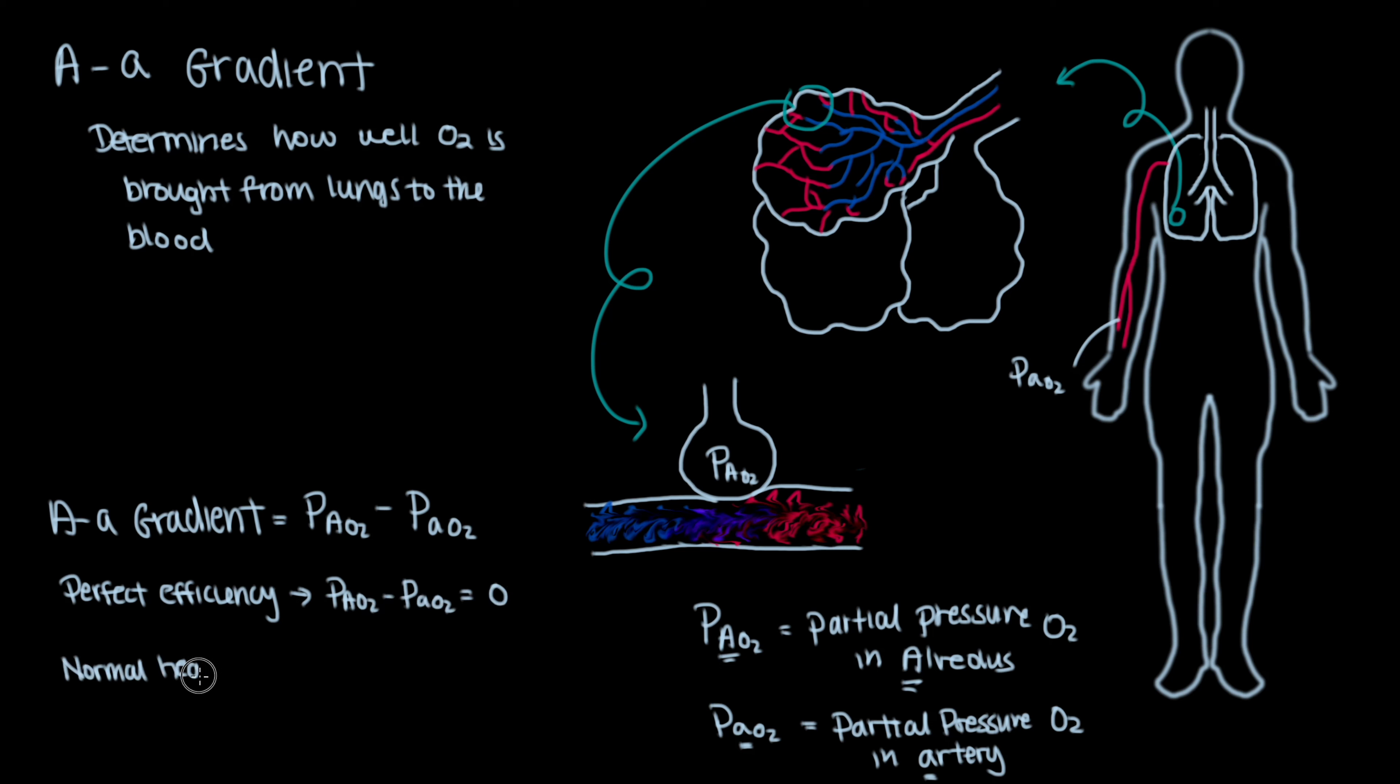However, normally the AA gradient can be up to 10 mmHg in a healthy young individual, and even slightly more as we age, roughly about an increase of 1 mmHg every 10 years or so.